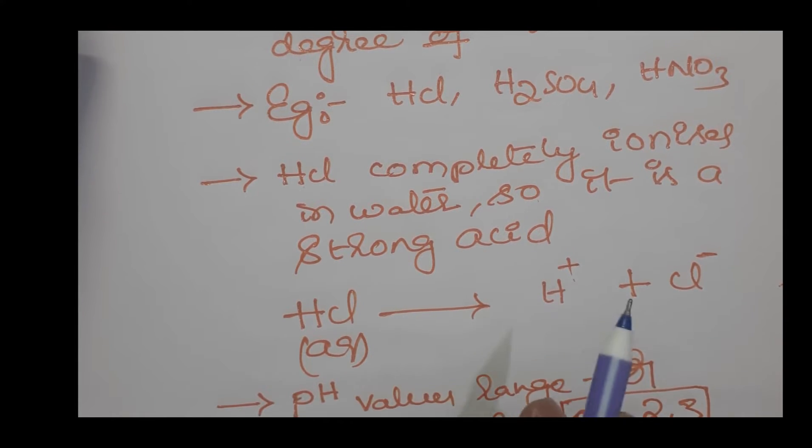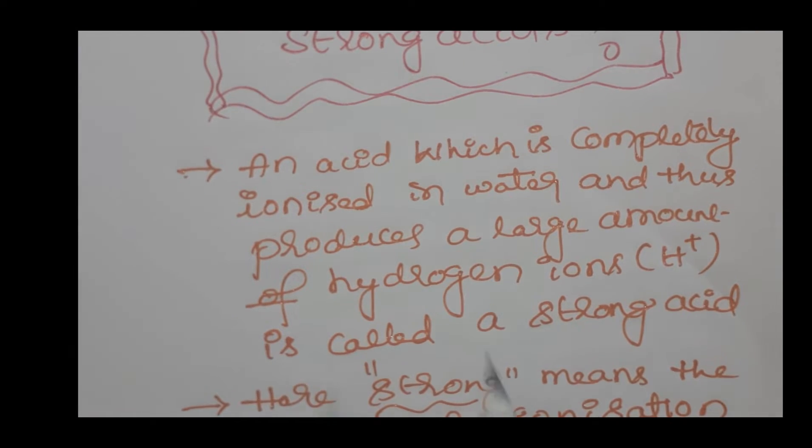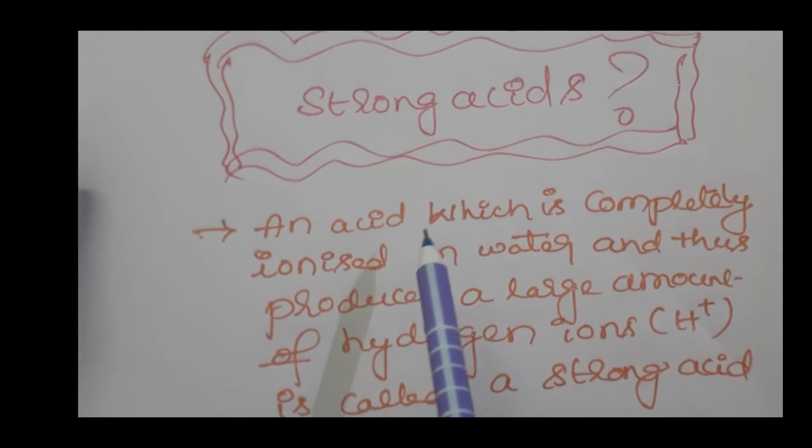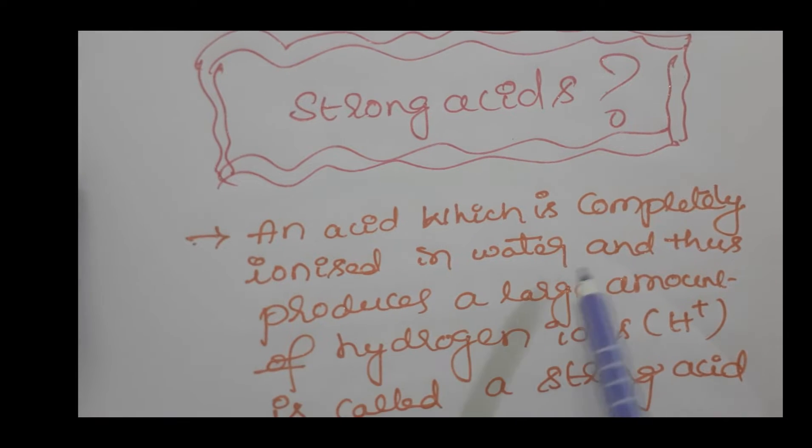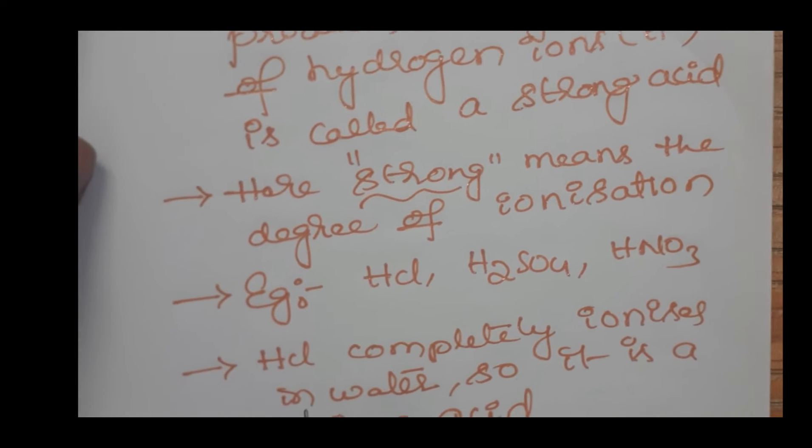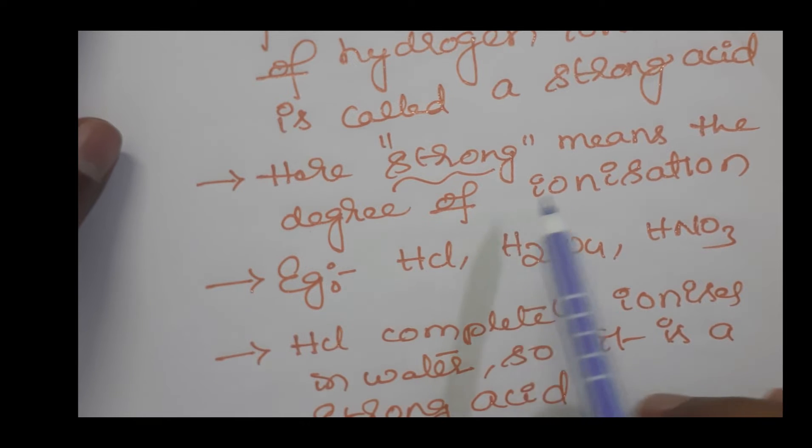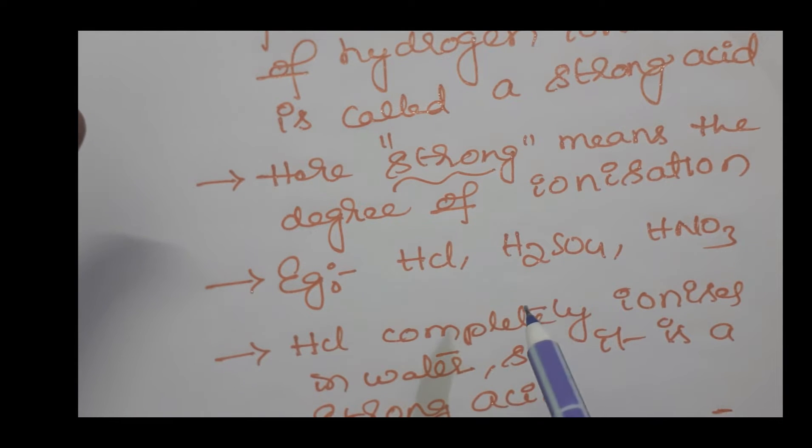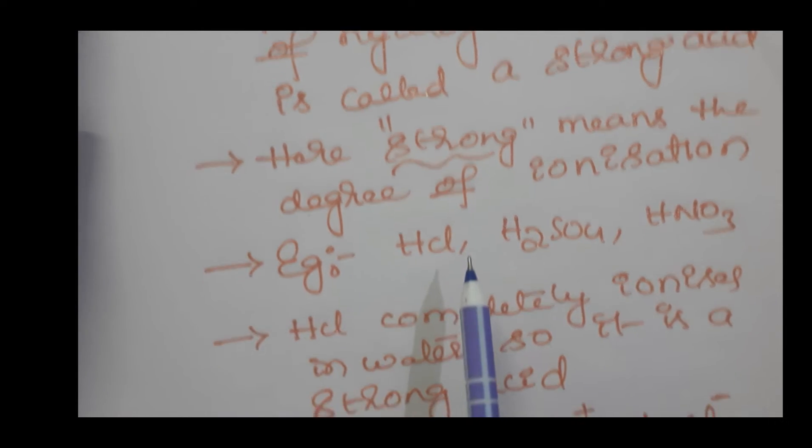Using the concept of ionization, we can define a strong acid. An acid which is ionized completely in water and thus produces a large amount of hydrogen ions is called a strong acid. Here, 'strong' refers to the degree of ionization - to what extent an acid completely ionizes.